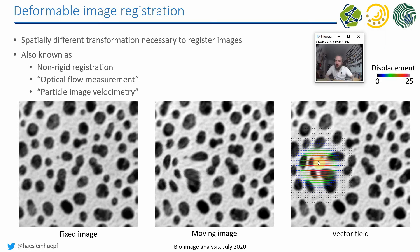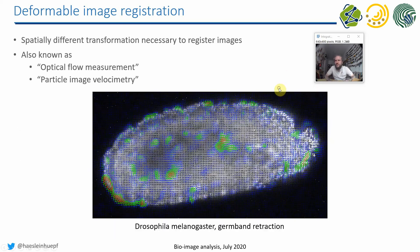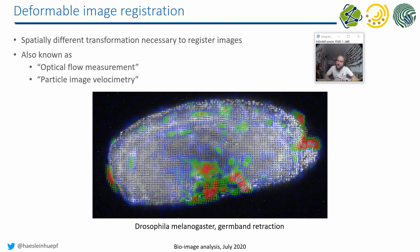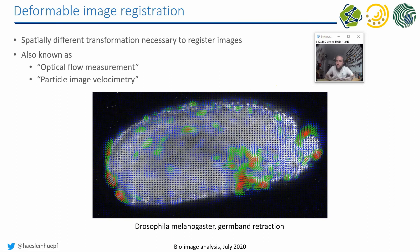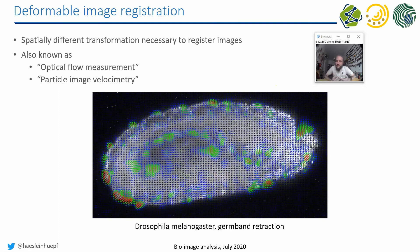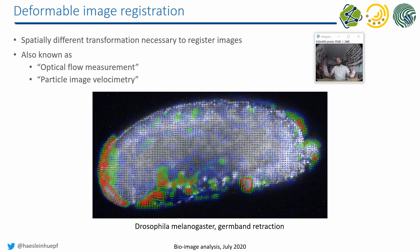These transformations are typically quantified or visualized with vector fields. You see here in this image colored lines, where the color represents the displacement in pixels. Here at the very center of this region, pixels are transformed to the left or right by 25 pixels, and the further you go from that region, this displacement decreases and becomes zero somewhere outside. This allows us, for example, in video sequences, to measure the flow of objects or the motion of cells from a general image perspective.